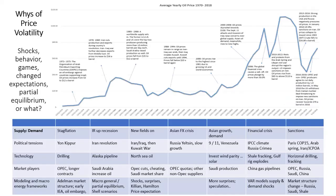Why have we had this price volatility? Just focusing on the past 50 to 60 years: we had stagflation, then new fields coming in, then growth in Asia, a financial crisis, and sanctions toward Russia and Iran. All these political tensions affect supply and demand. New technology came in — exploring deep sea oil fields in the North Sea, going to Alaska, and later hydraulic drilling opening up shale fields in the United States. There are also different roles of different market players and their shifting influence, which is not easy to model.